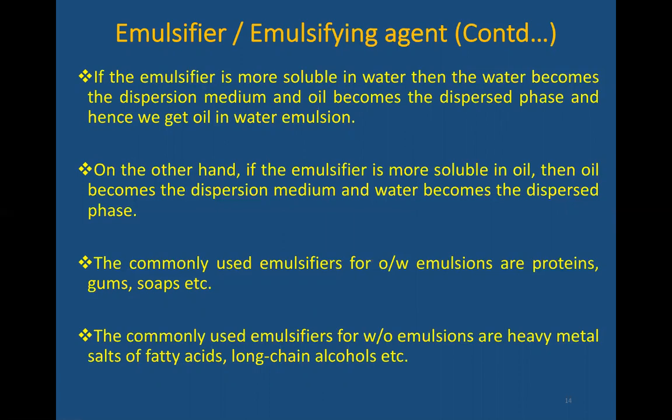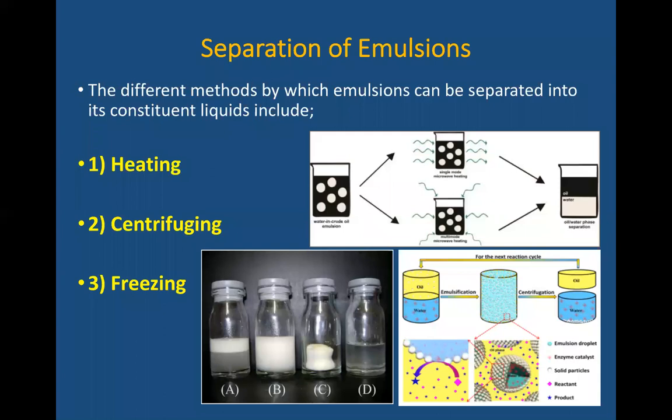Commonly used emulsifiers for oil in water emulsions are proteins, soaps, or salts. These are some examples, and there are also commonly used emulsifiers for water in oil emulsions.